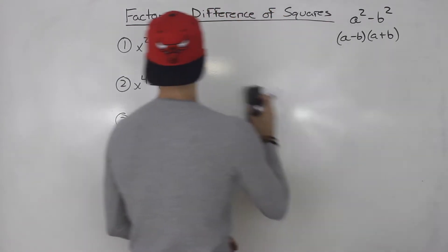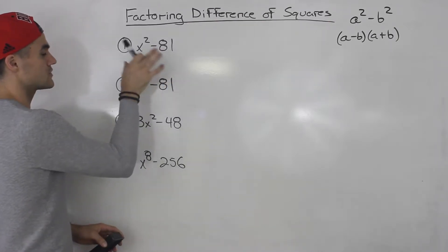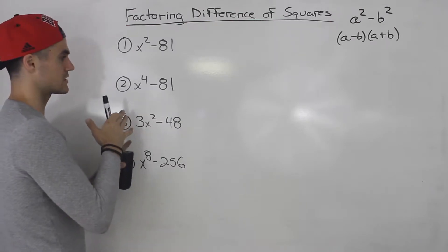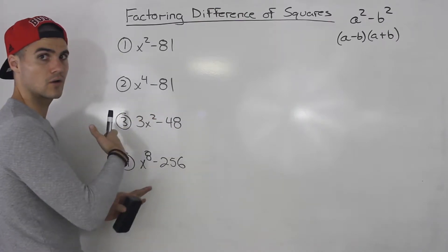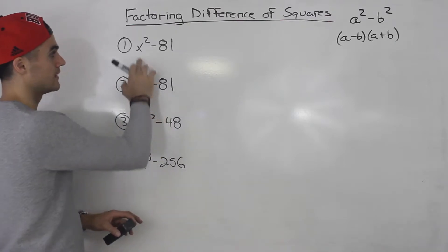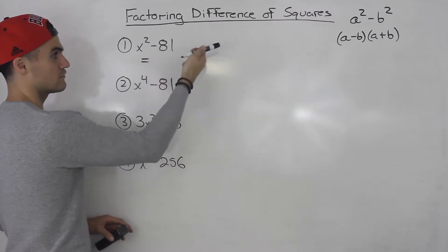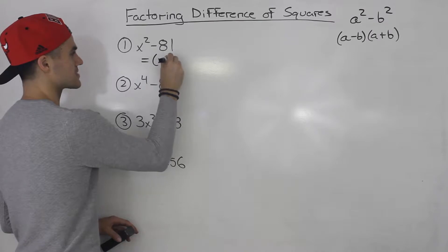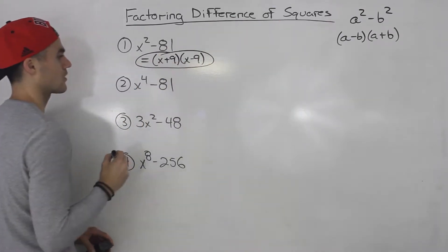Going to number one — pretty easy: x squared minus 81. First thing you always want to check before getting into this is if you could take anything out, because sometimes stuff won't be a difference of squares but when you factor out the common factor, the remaining bracket ends up being one. In this case we can't factor anything out, so we go straight into factoring as a difference of squares. x squared minus 81 turns into x plus nine, x minus nine.